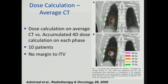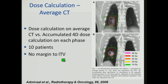Regarding dose calculation, the question is which CT to rely on. A nice study in the Green Journal compared 3D dose calculation on average CT versus 4D calculation on each phase with accumulated dose. For 10 patients using the worst scenario — no margin to the ITV — they achieved very similar dosimetric results. Right now, it is pretty much standard practice to use average CT for dose calculation and for setup as well.